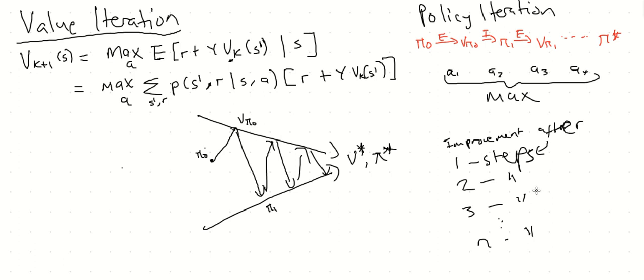If there's one thing you should take away from this video, it's that value iteration is basically doing the same thing as policy iteration, but it does not complete the whole evaluation stage — it already takes the maximum over all actions after just one step. To better understand the whole algorithm, I'm going to write the pseudocode for value iteration.